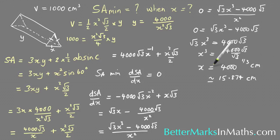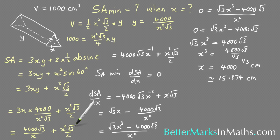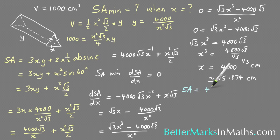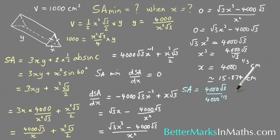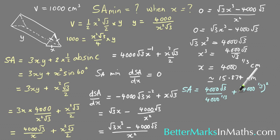That is the x value when the surface area is a minimum. To find the minimum surface area itself, substitute this x value into the surface area expression: SA equals 4000 root 3 over x, where x is 4000 to the one-third, plus x squared — that is 4000 to the one-third squared — times root 3 over 2.